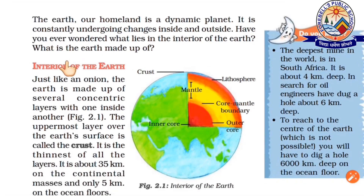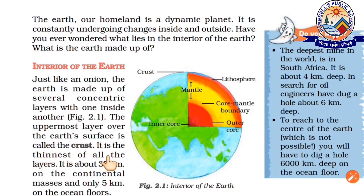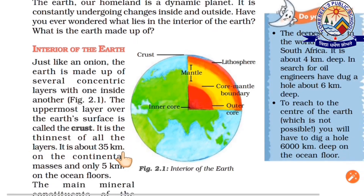Just like an onion, the earth is made up of several concentric layers, with one inside another. The uppermost layer over the earth's surface is called the crust. It is the thinnest of all the layers.